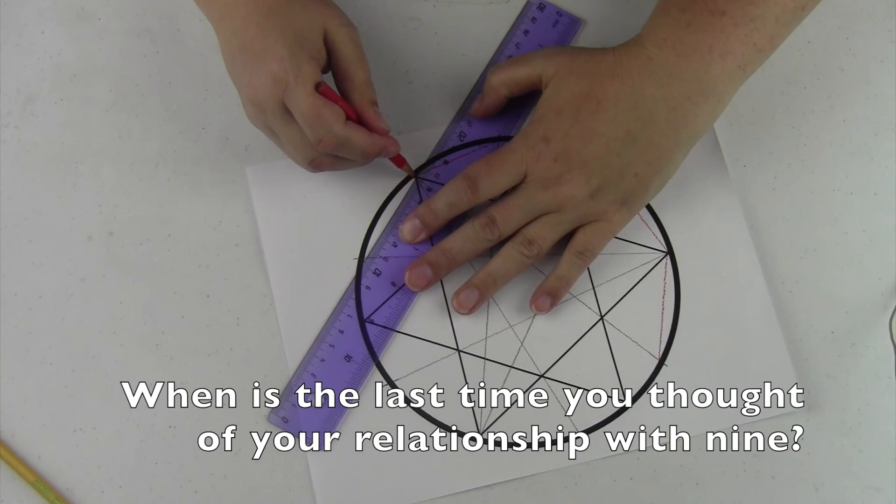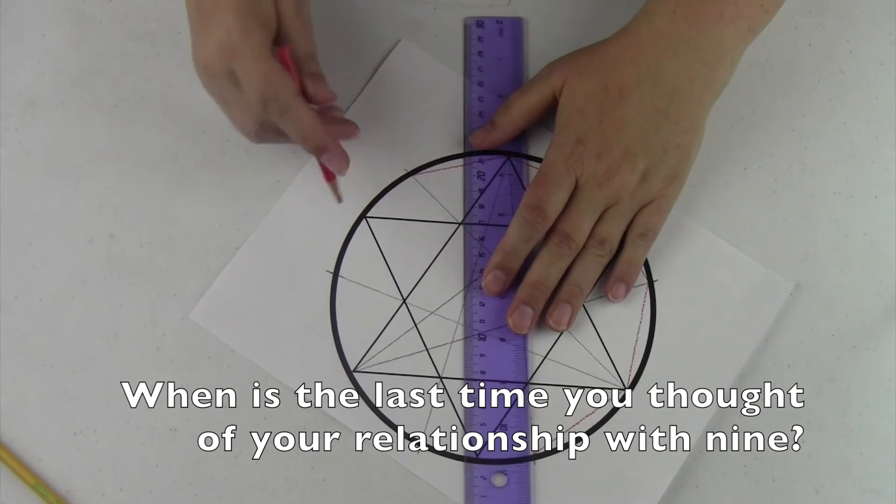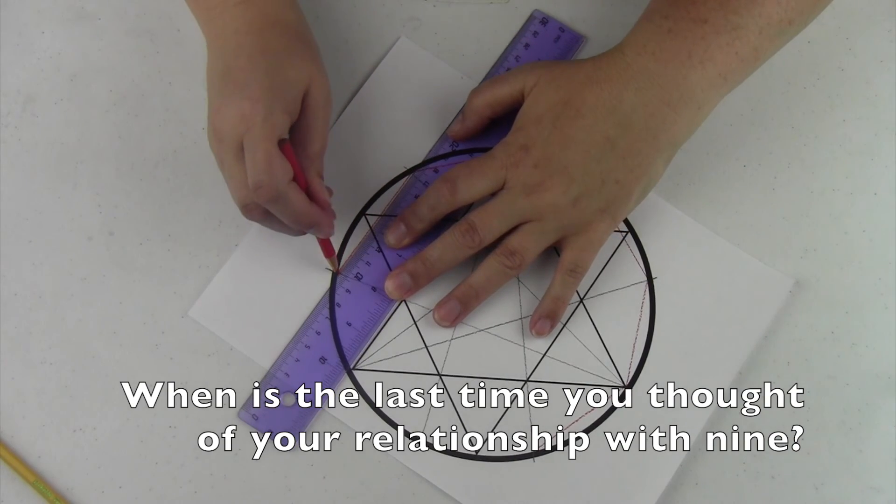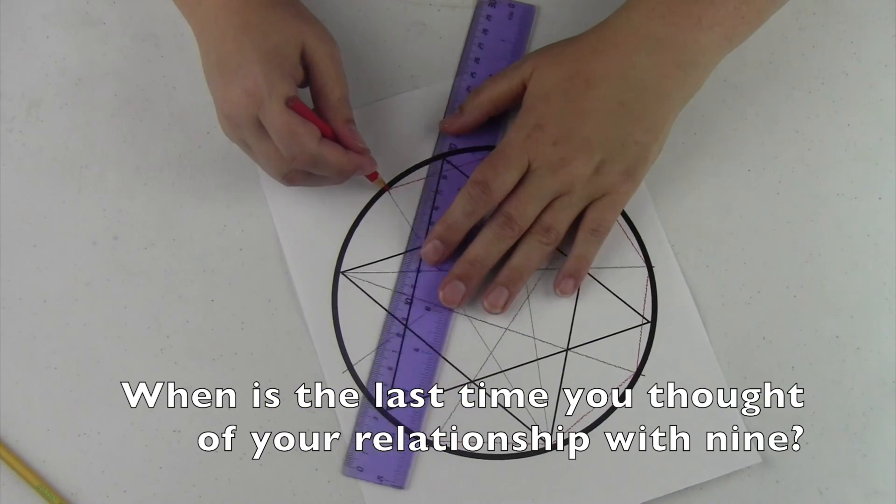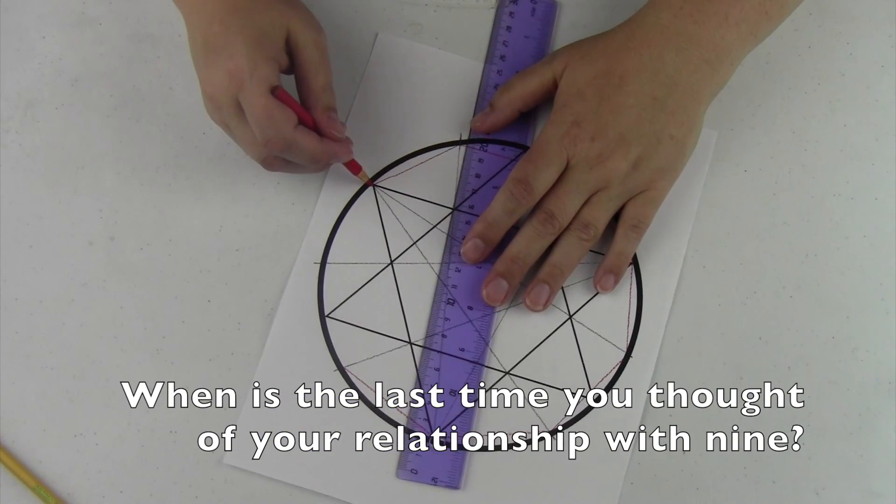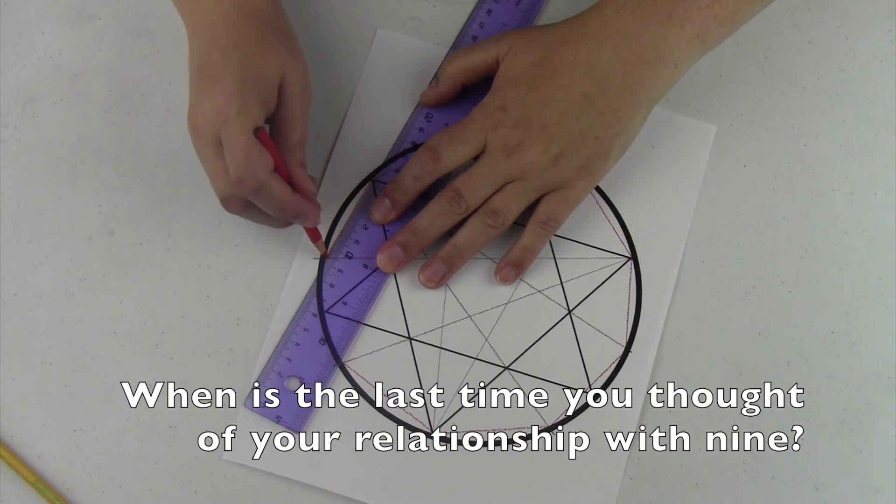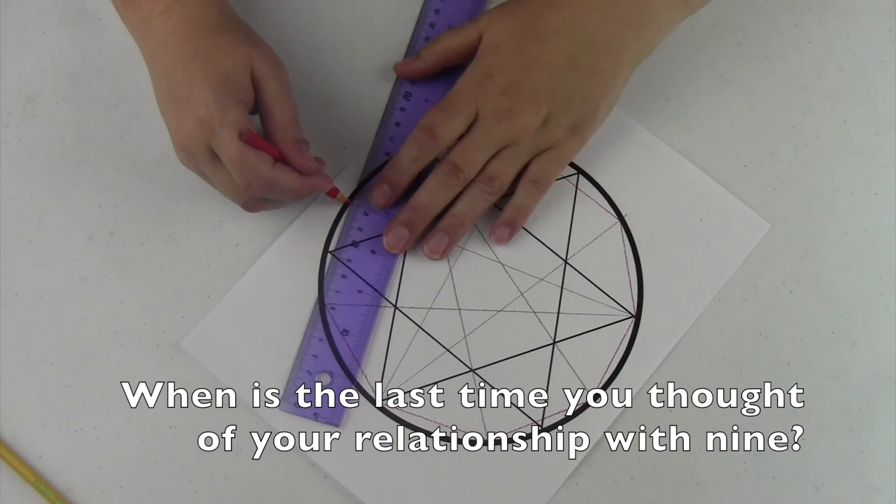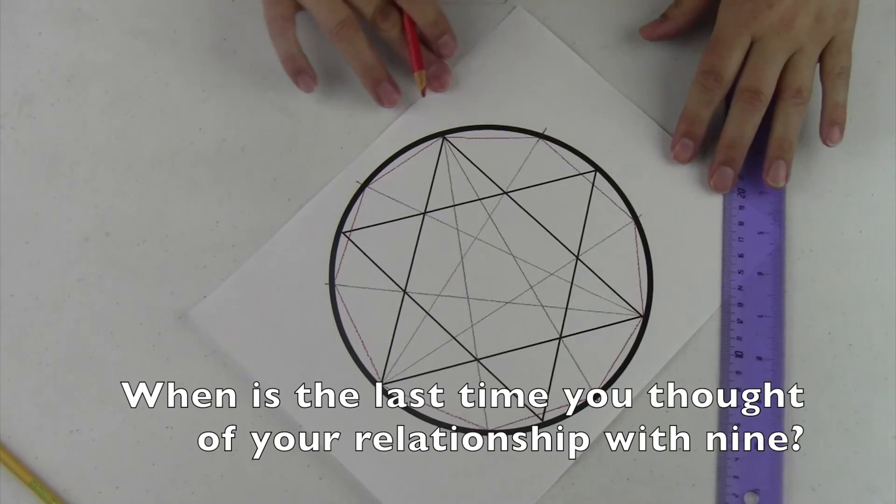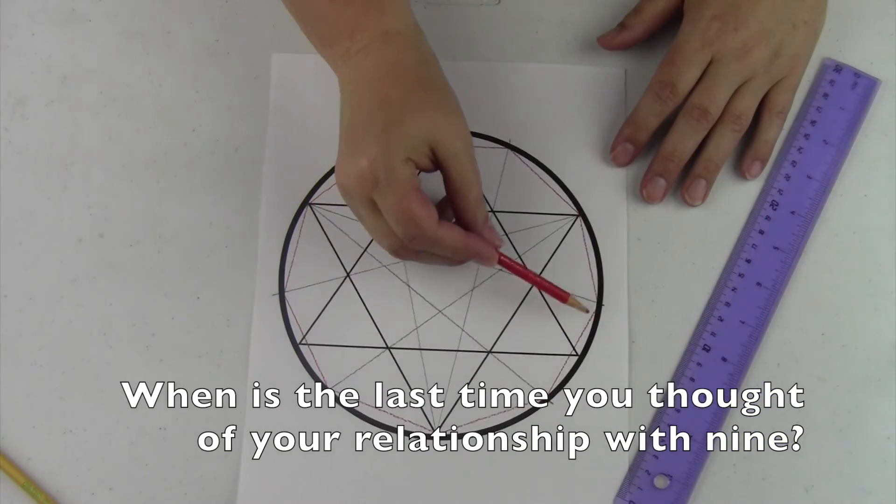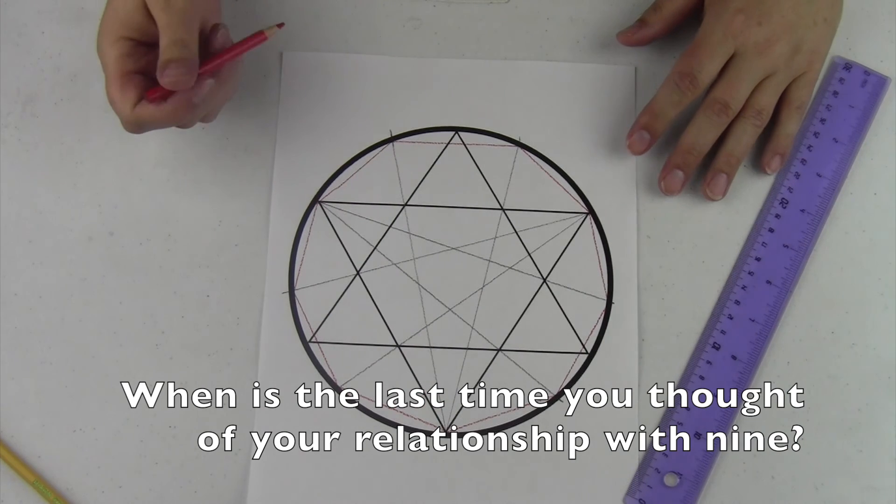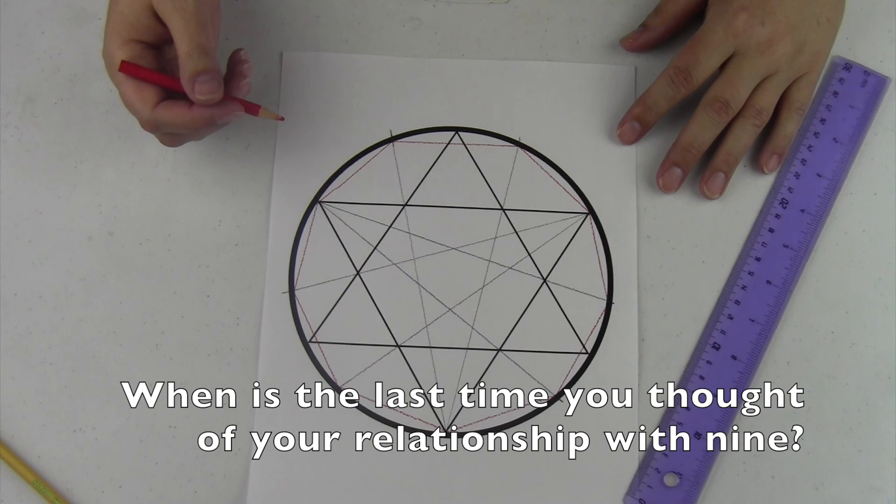Continuing, going all the way across or around, skipping over this one. We're going around nine times. There. Now you can see on the red marks, we have nine sections of the nonagon.